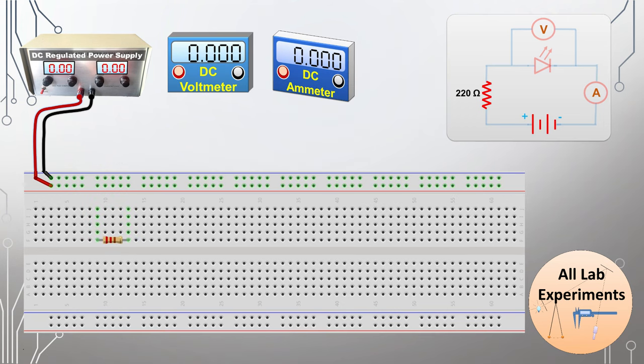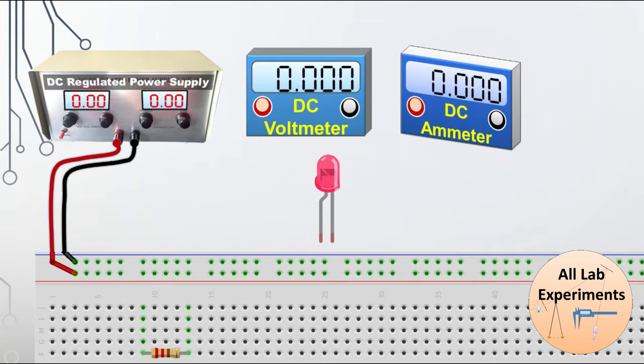Before inserting our red LED on the breadboard, we should know about the terminals of a light emitting diode. Generally, the leg which is longer is the P side, and the shorter leg is the N side. In some cases, the leg with the bend is P and the straight leg is N.